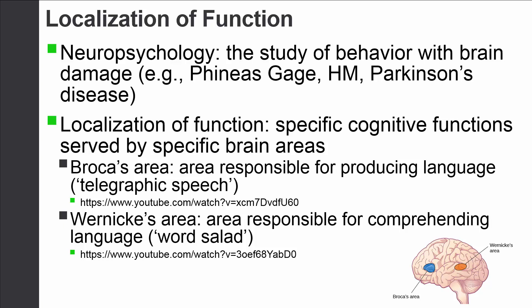This idea is called localization of function. Localization of function basically says that there is a specific cognitive function — or more generally a behavior, as in the case of Parkinson's — that is served by a very particular brain area. This brain area is responsible solely for that specific function.